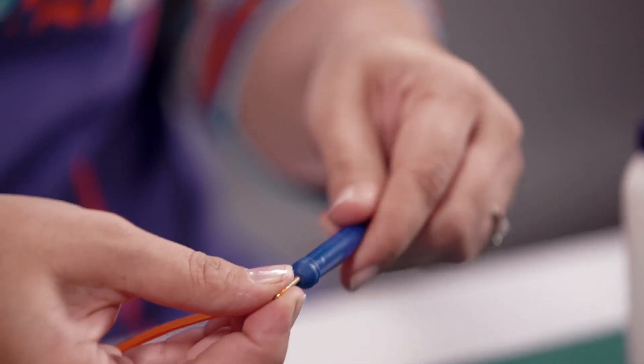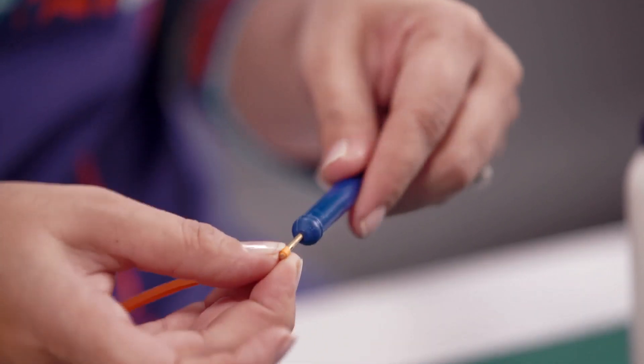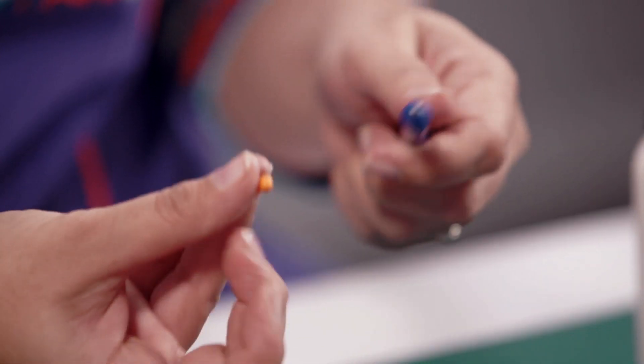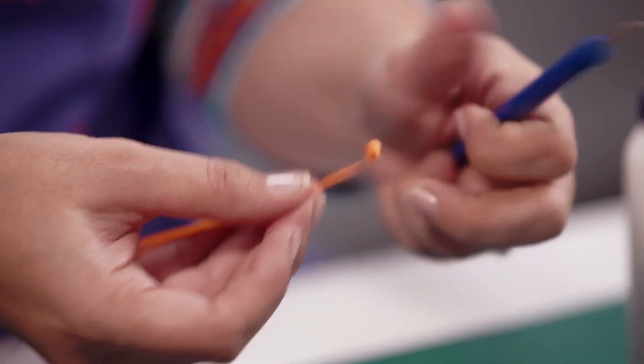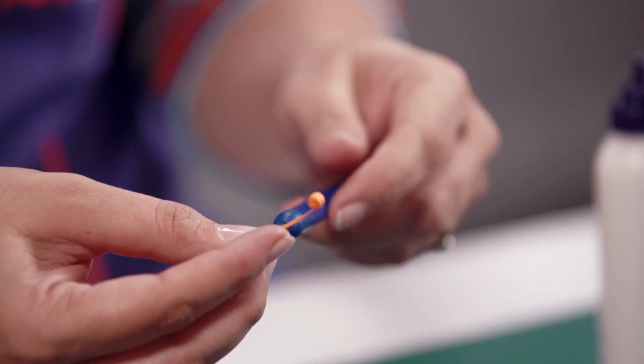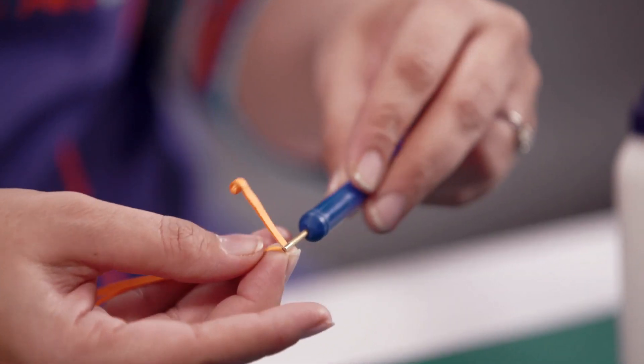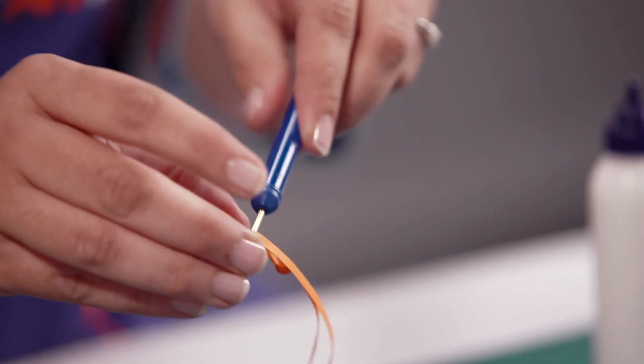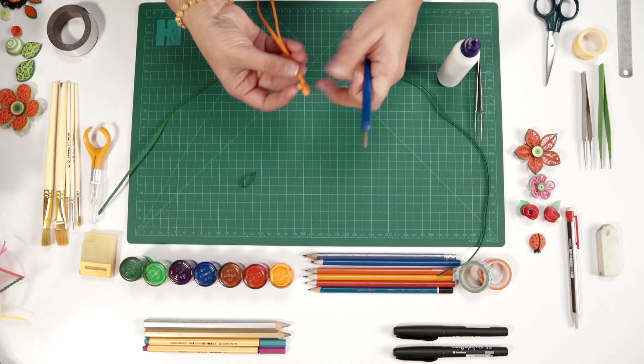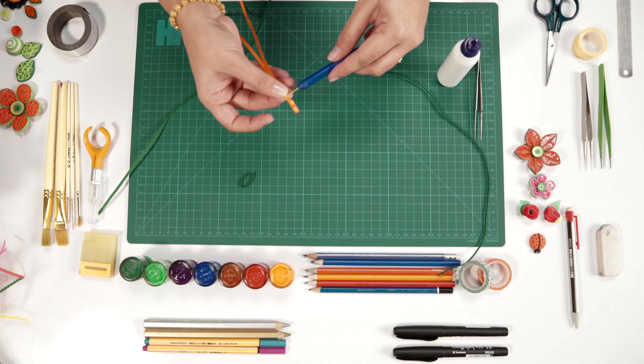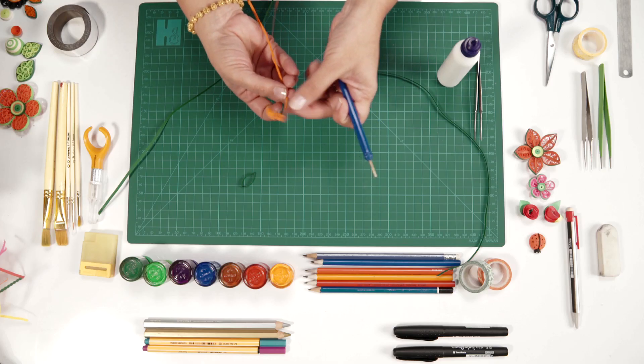Quill about 2-3 rounds and leave it, then move down, leave about an inch of strip and start quilling again. Move lower and continue the same process till the strip ends. This is how it's going to look.